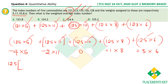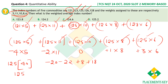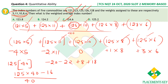Computing the deviations: −4×5 = −20, −2×11 = −22, 0, +1×8 = +8, +3×6 = +18. Sum of deviations: −20 − 22 + 8 + 18 = −16. So the total is 125×40 − 16. Dividing by 40: you get 125 − 16/40 = 125 − 0.4 = 124.6.